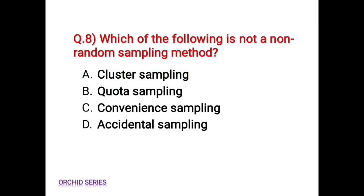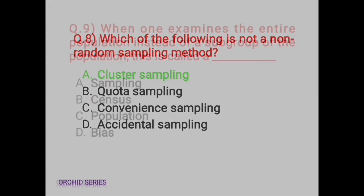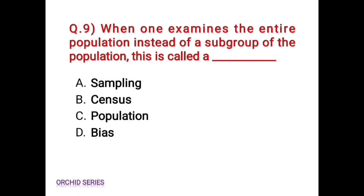Next question: which of the following is not a non-random sampling method? Question number 9: when one examines the entire population instead of a subgroup of the population, this is called census.